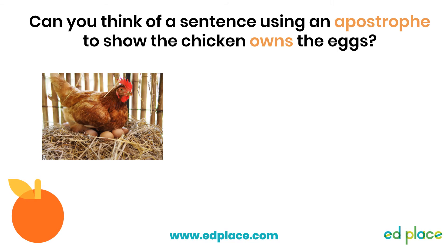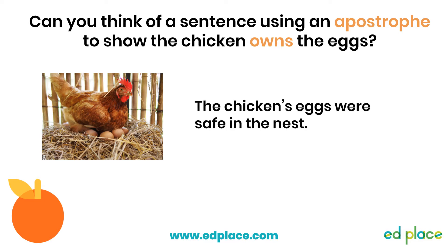Here's another example and this time it's over to you. I want you to see if you can write a sentence using an apostrophe to show that the chicken owns the eggs. Pause the video now and give it a go. Here is my example sentence. I have an apostrophe in the word 'chicken's' because the chicken is the one that owns the eggs. It comes after the N because there is just one chicken who owns the eggs.